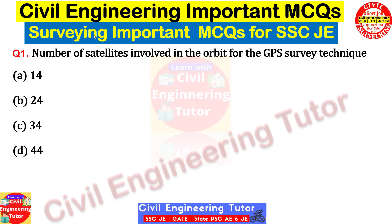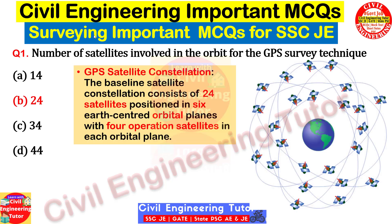Question number one: the number of satellites involved in the orbit for the GPS survey technique — options are 14, 24, 34, and 44. The correct answer is 24. The explanation: there are totally six orbits, and in each orbit there are four satellites. So six multiplied by four equals 24 satellites involved in the GPS survey technique, or GPS satellite constellation. So the correct answer is 24.